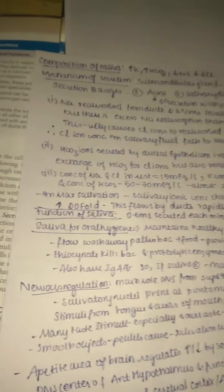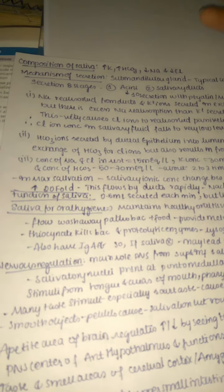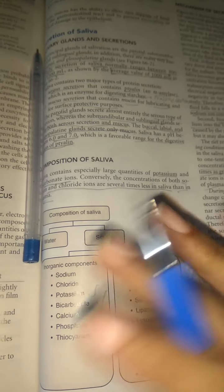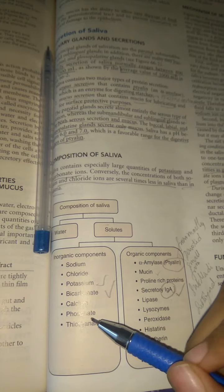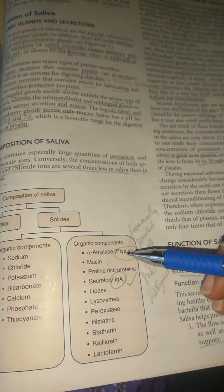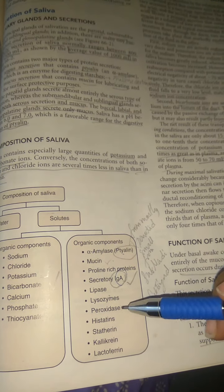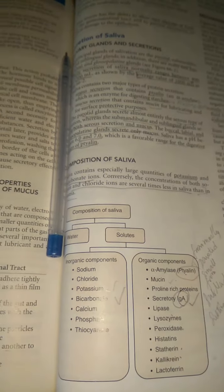Regarding the composition of saliva: saliva contains more potassium and bicarbonate, and lower amounts of sodium and chloride. Looking at the table, saliva contains water and solutes divided into inorganic and organic components. Inorganic components include sodium, chloride, potassium, bicarbonate, calcium, phosphate, and thiocyanate. Organic components include alpha-amylase, ptyalin, mucin, proline-rich proteins, secretory IgA, lipase, lysozyme, peroxidase, histatins, statherin, kallikrein, and lactoferrin.